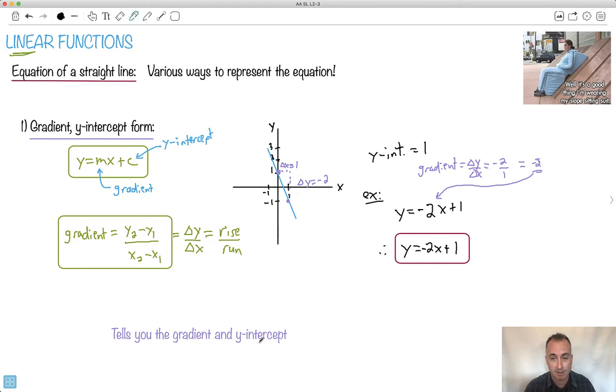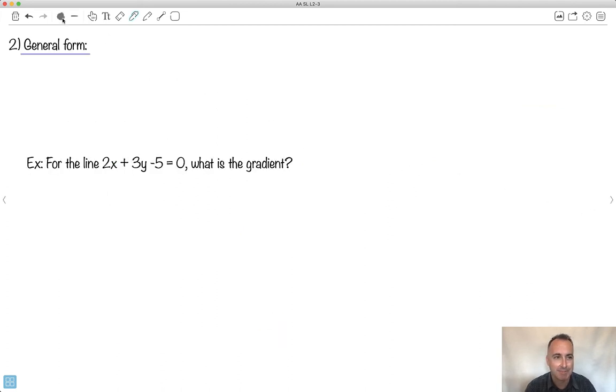So that's this gradient y-intercept form. I like this one. This tells you the gradient and the y-intercept. That's why we call it that. There's another form. This way right here, honestly, I don't really like it very much. I don't find it very useful, but oh well.